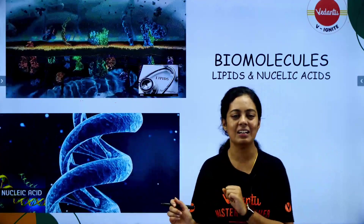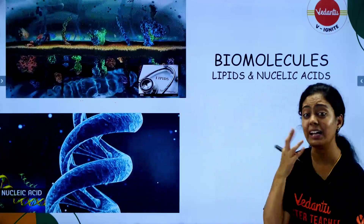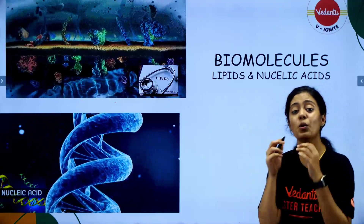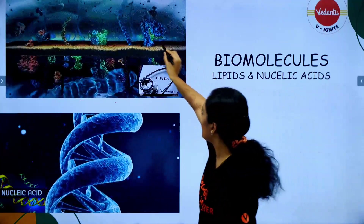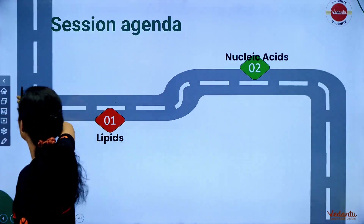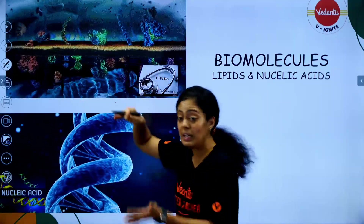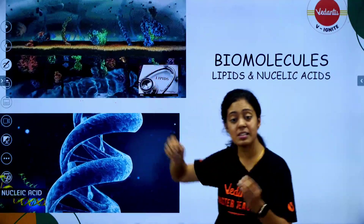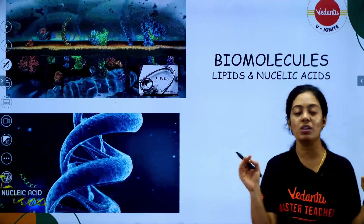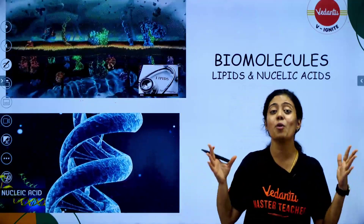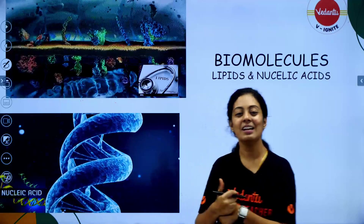Let's first look at where lipids are found. Here is a beautiful picture of a cell — you can see the plasma membrane with a lipid bilayer, proteins, and substances being transported in and out. Your lipids are the major components of your plasma membrane, shown here as the phospholipid bilayer. So lipids are not just making you fat — they are also making your plasma membrane.